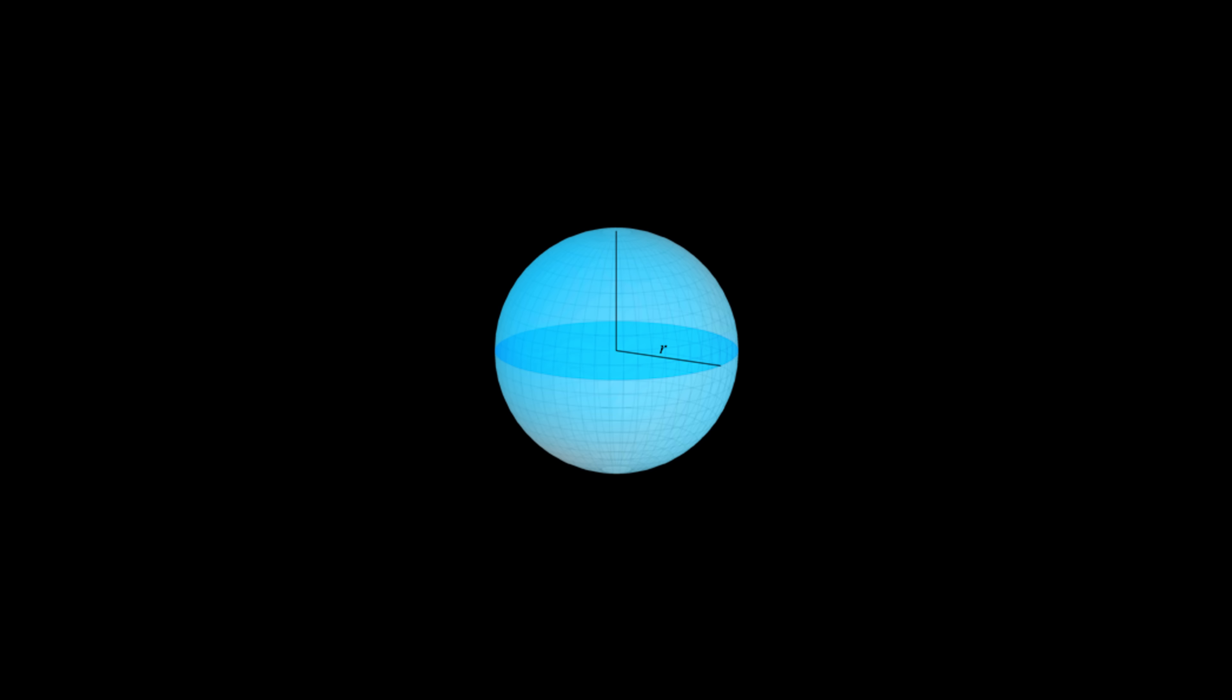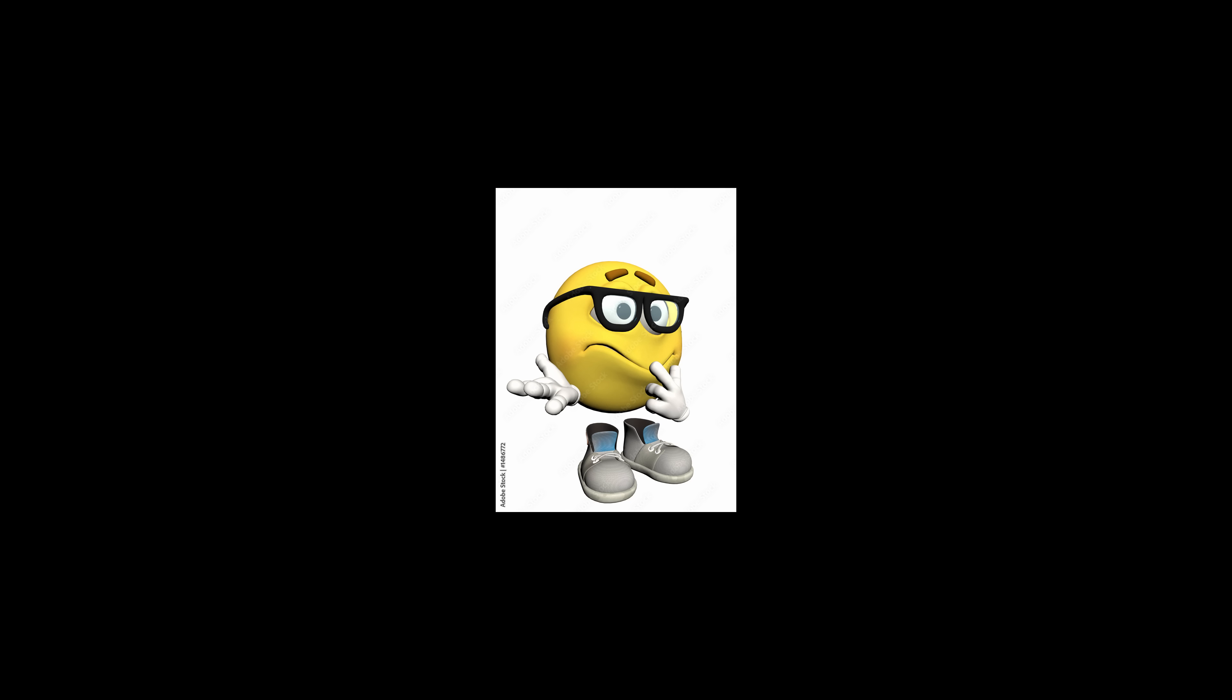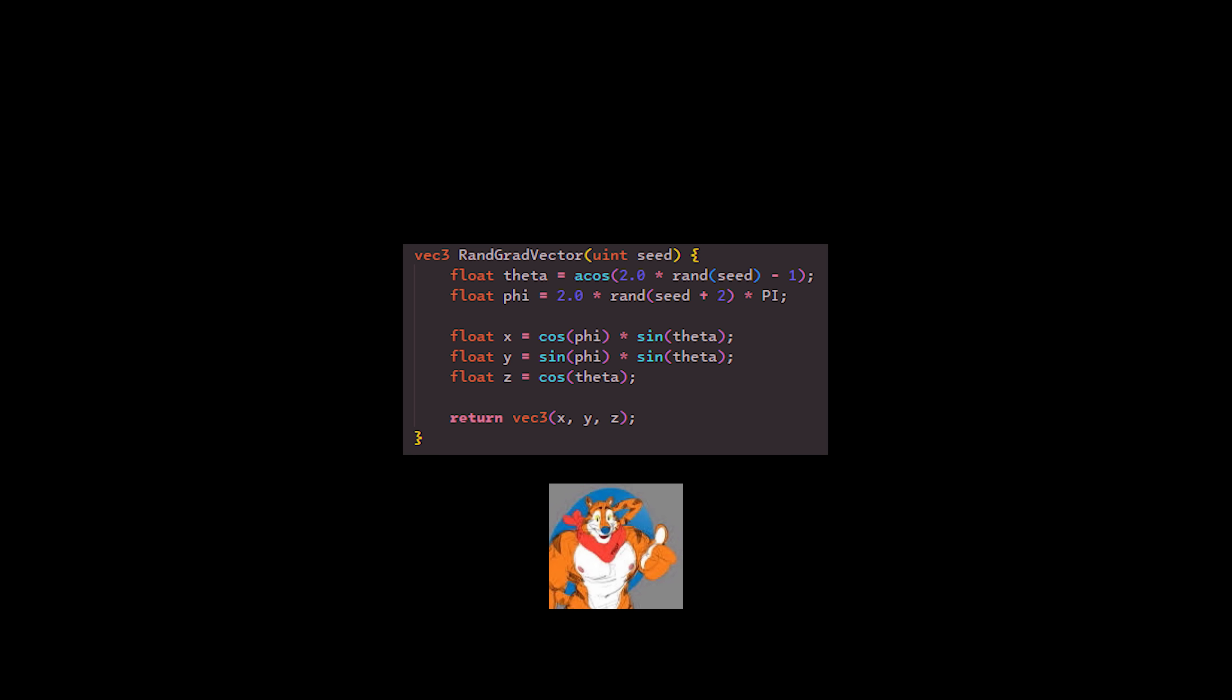The bunching of gradient vectors causes the perlin noise to have more directional artifacts, as it's more likely for gradients to point in similar directions. To fix this, we want our gradient vectors to be uniformly distributed on a sphere rather than a cube. There's a number of ways to do this, but the math is pretty uninteresting, so here's one method. With uniformly distributed gradients, there are less directional artifacts in the perlin noise.